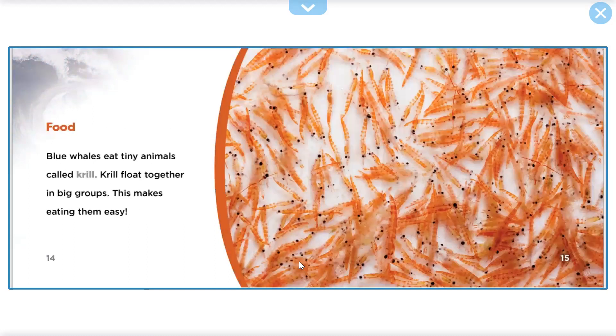Blue Whales eat tiny animals called krill. Krill floats together in a big group. This makes eating them easy.